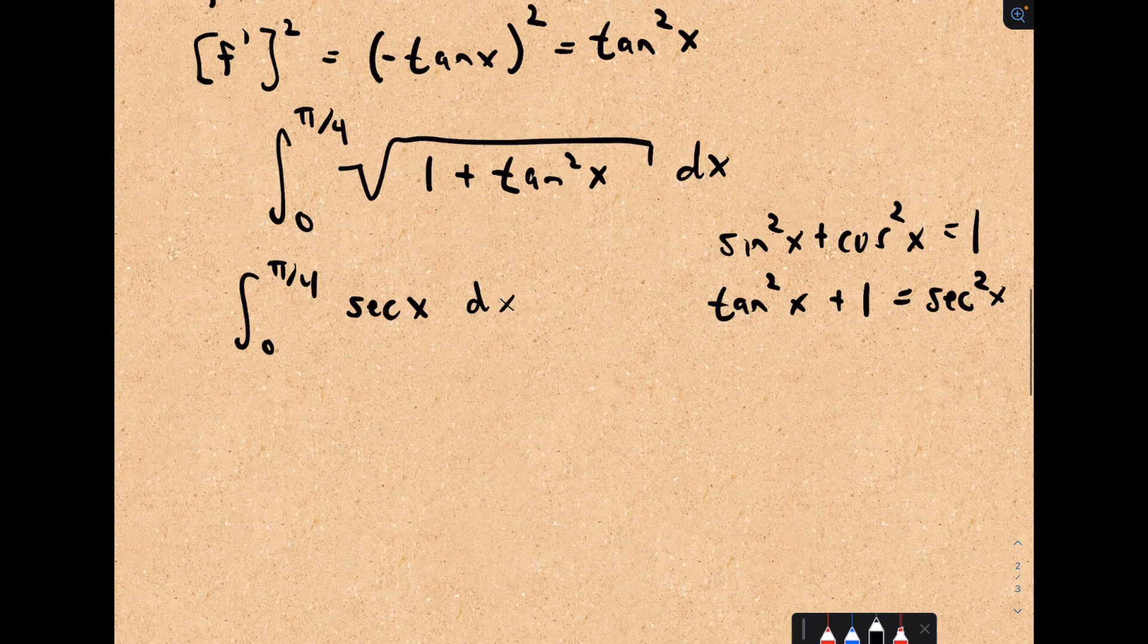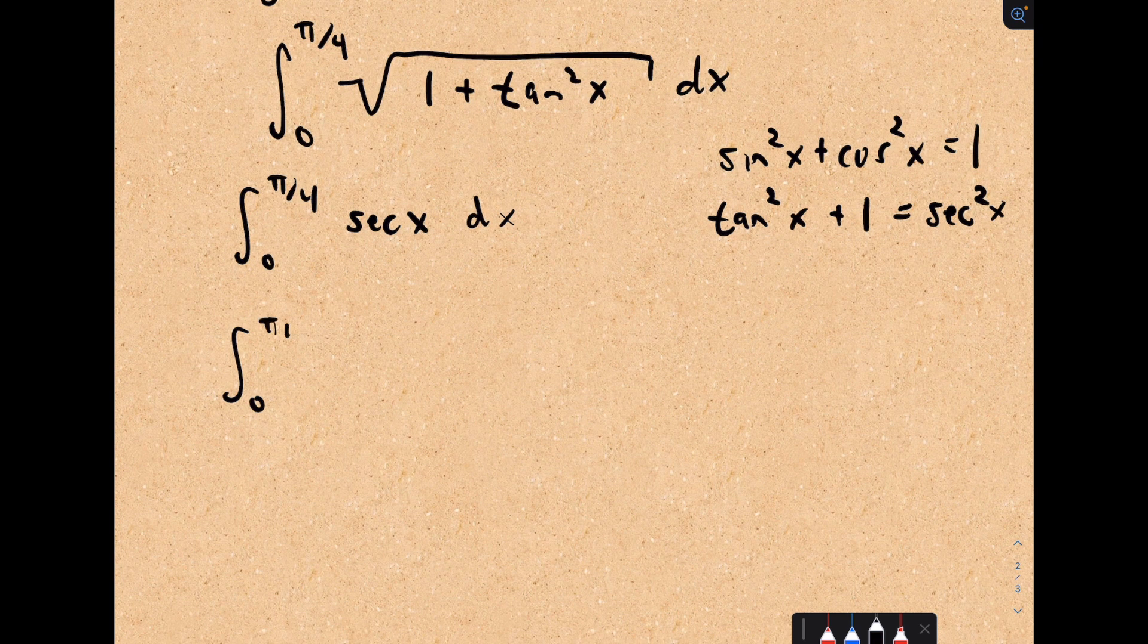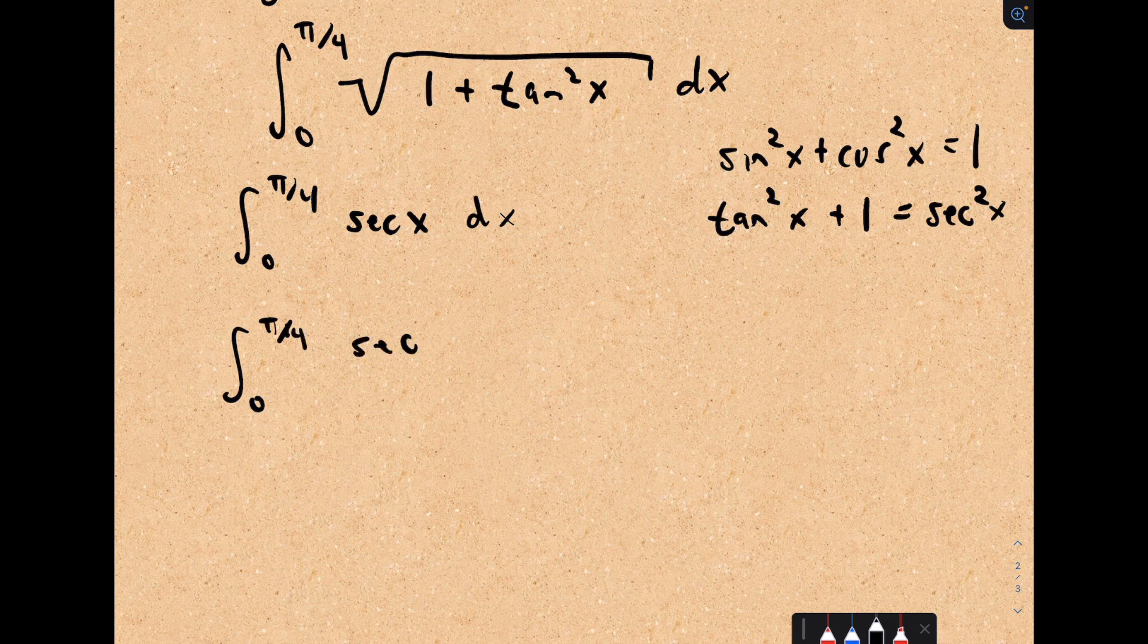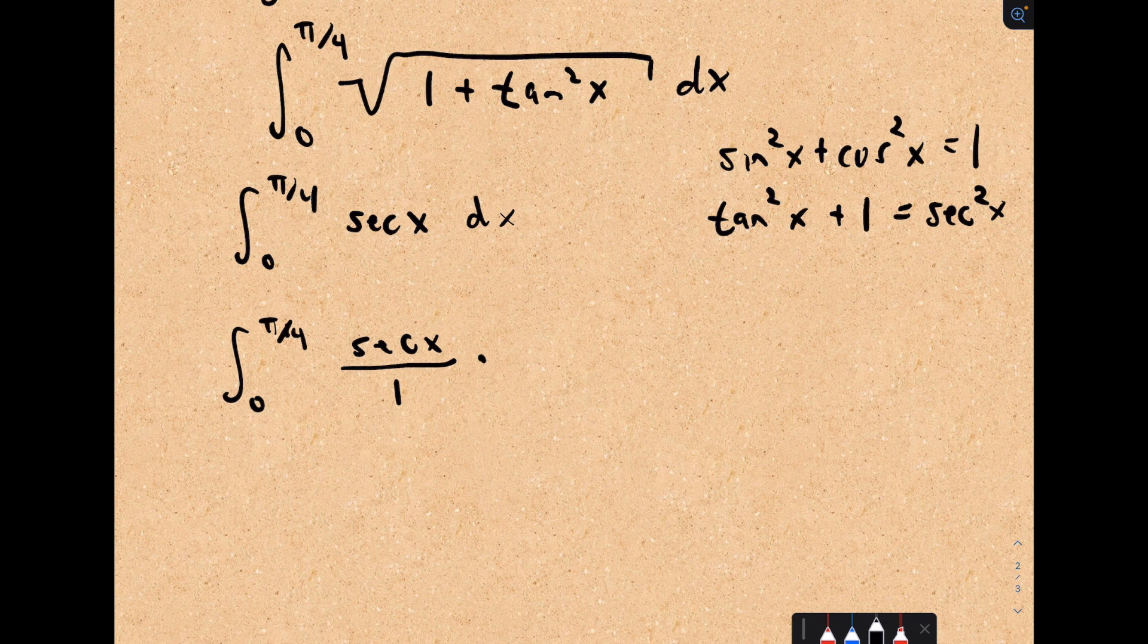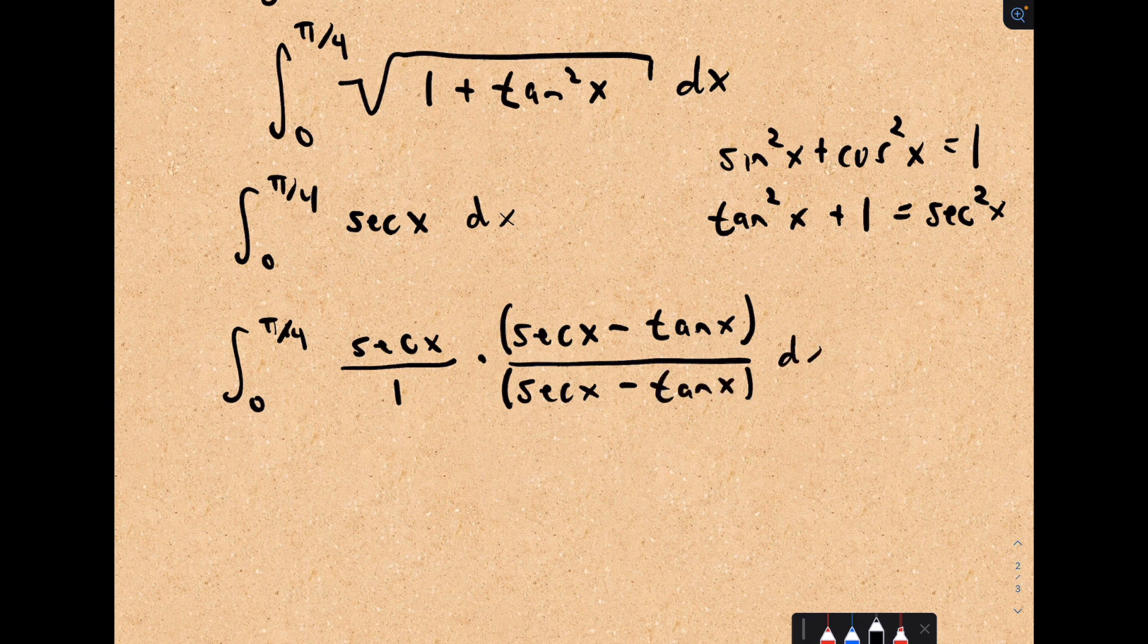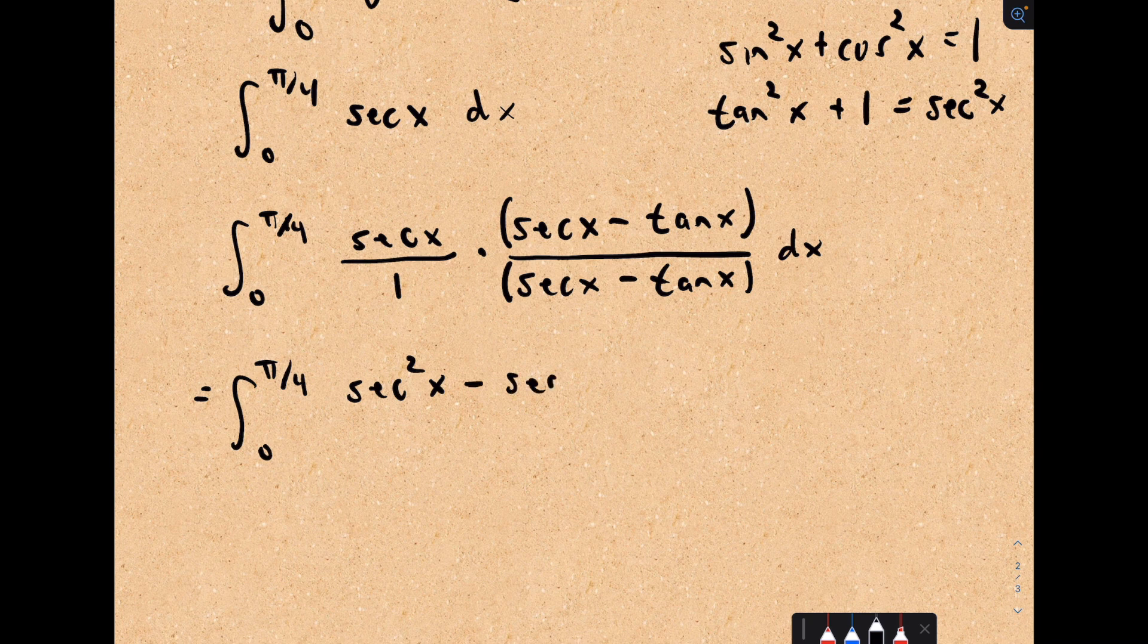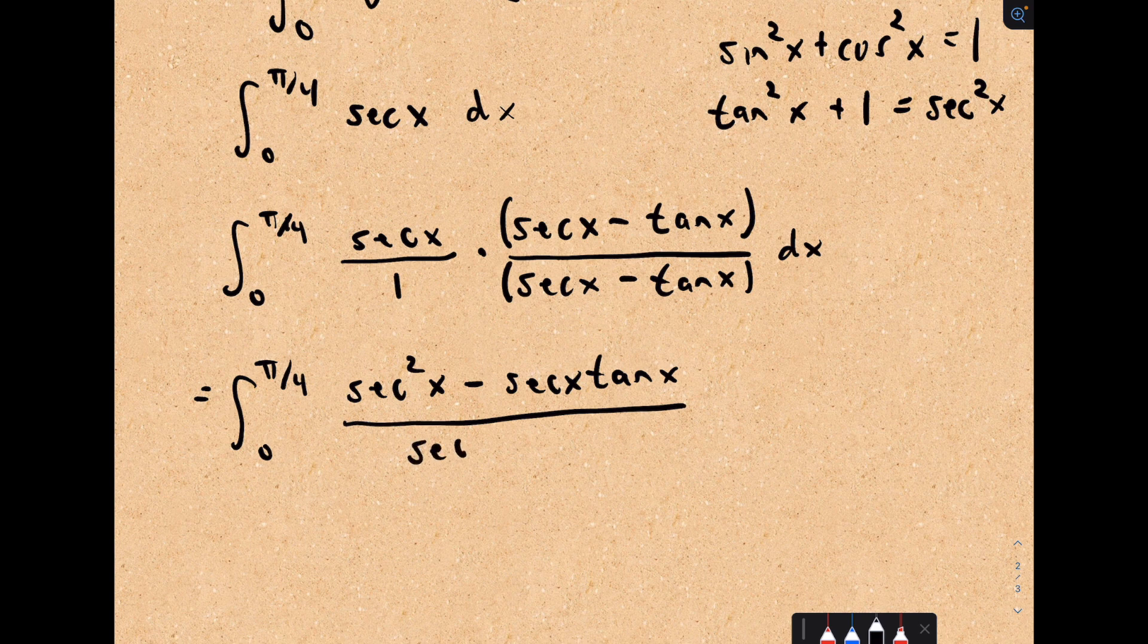So now the question is, how do we integrate this thing? This is where maybe you know a formula, maybe you don't. The way that we can do this one, it's actually maybe not quite obvious. I'm going to write secant of x as secant of x over 1. I'm going to multiply this by secant x minus tangent x, and I'm going to do that to the numerator, and I'm also going to do it to the denominator. In the numerator, I would get secant squared x minus secant x times tangent x. In the denominator, I have secant of x minus tangent of x.